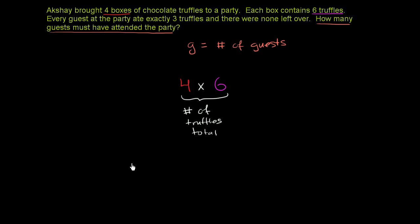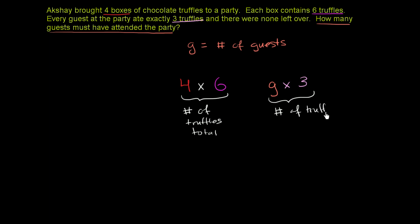Now what's another way of thinking about the total number of truffles at the party? Well, you have G guests, and each guest ate three truffles. So G times three is also going to be the number of truffles total. So these two things need to be equal to each other.